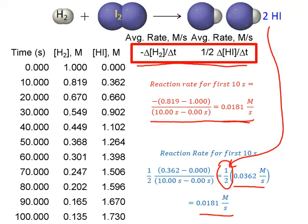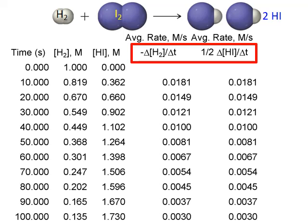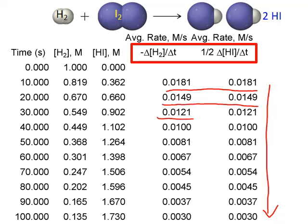This works regardless of which reactant or product we measure, as long as we use the appropriate coefficient from the balanced chemical equation. We can measure any reactant or product's concentration change over time and use it to calculate a consistent overall reaction rate that applies to all terms within the reaction. The overall reaction rate will vary between different time intervals, but applying the same formula to all 10-second intervals shows the reaction rate slows down over time.